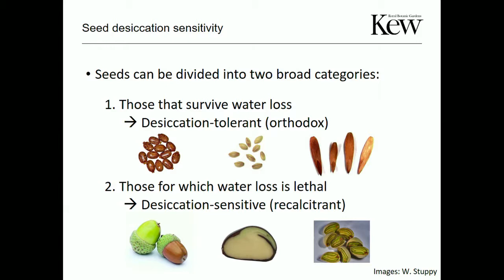Orthodox seeds can wait out a drought or cold winter to germinate at a more appropriate time. In contrast, desiccation-sensitive seeds are far less common globally. These species are shed with very high water contents and shed metabolically active — water loss is lethal to these seeds.